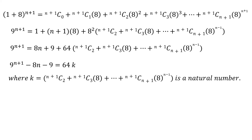We can rearrange the terms in this equation and write: 9 raised to the power n plus 1, minus 8 times n, minus 9 equals 64 times k, where k equals n+1 choose 2, plus n+1 choose 3 times 8, and so on, plus n+1 choose n+1 times 8 raised to the power n minus 1. Here k is a natural number. This is the equation we wanted to arrive at.